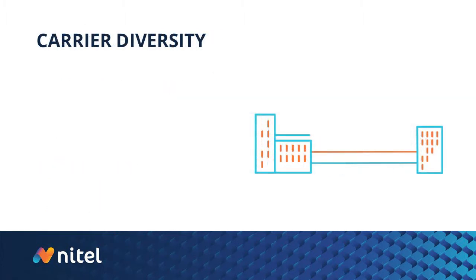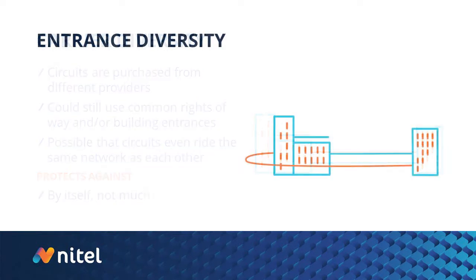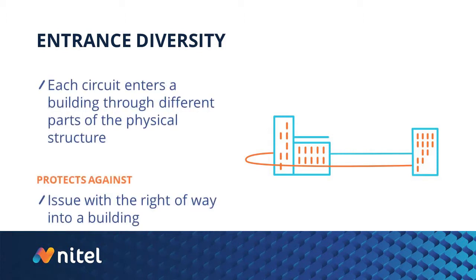Second, we have carrier diversity. This simply means a customer buys connections from multiple providers. Third, entrance diversity, which is when circuits are delivered through different parts of the building's physical infrastructure.